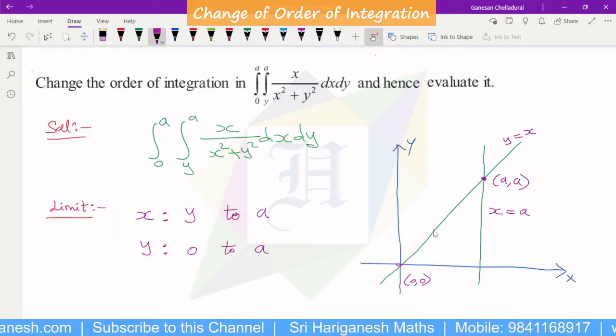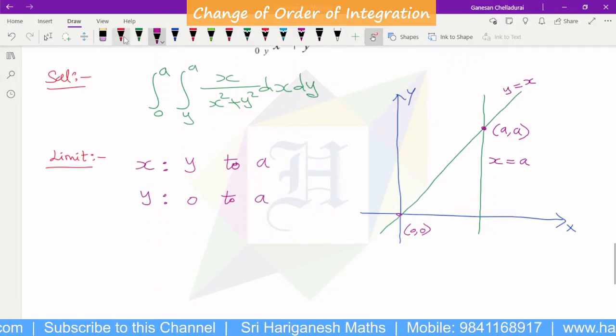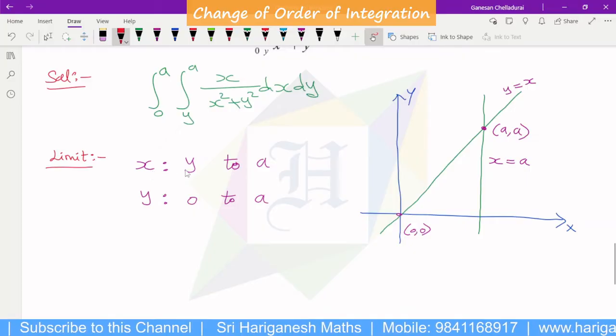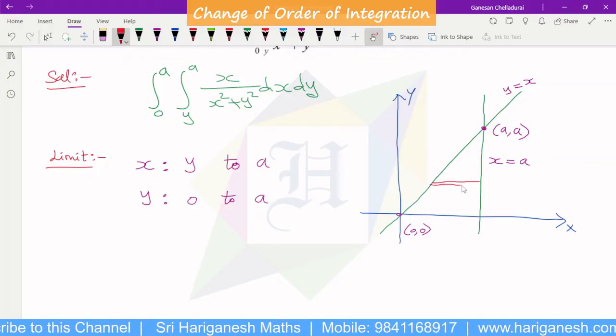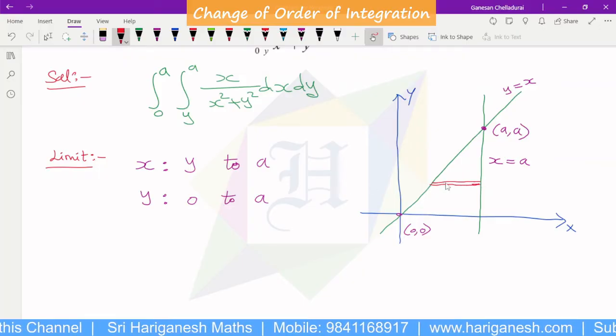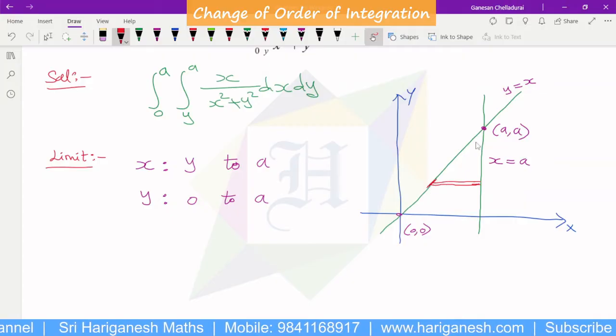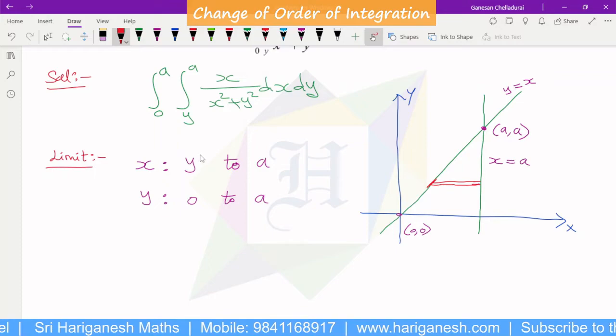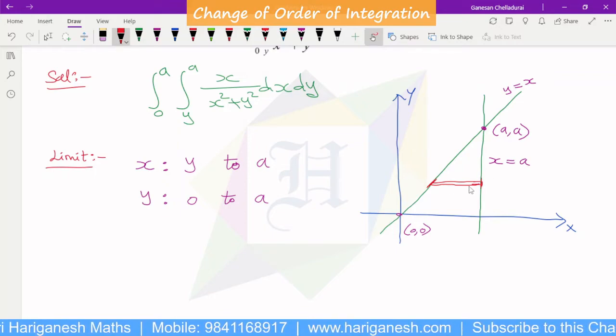This is the strip. The strip is between the line x is equal to y and x is equal to a. So our region strip is correct.